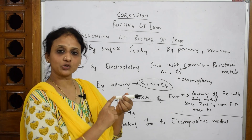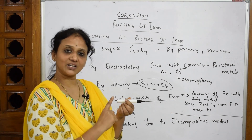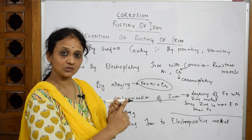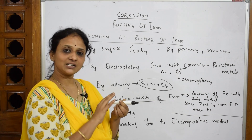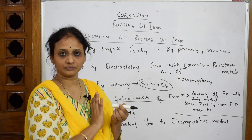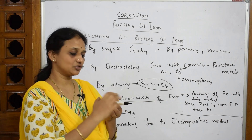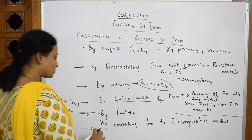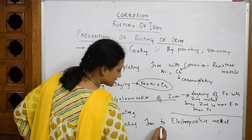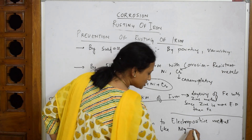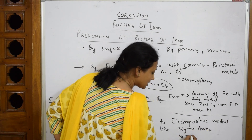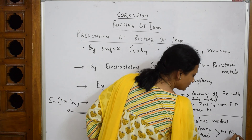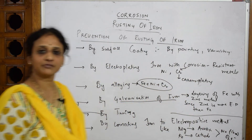The last method is connecting iron to an electropositive metal. Magnesium is more electropositive than iron, so magnesium is connected to iron and acts as the anode, while iron acts as the cathode. Since magnesium is more electropositive, it does not allow electrons to flow, so no flow of electrons means iron does not get corroded. Hence iron is protected from corrosion by connecting it to electropositive metals like magnesium.